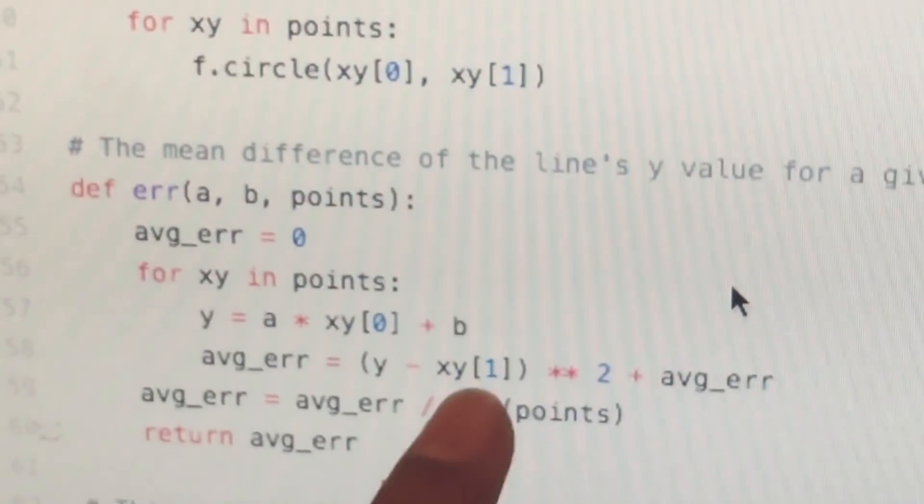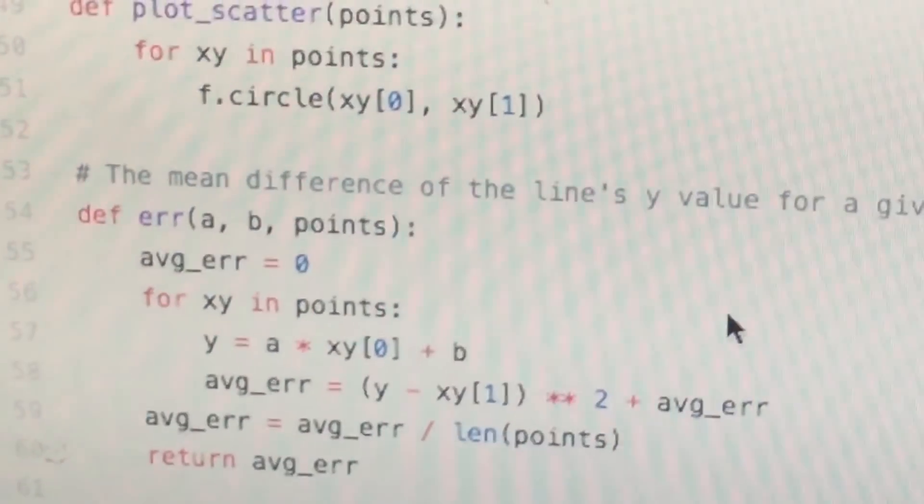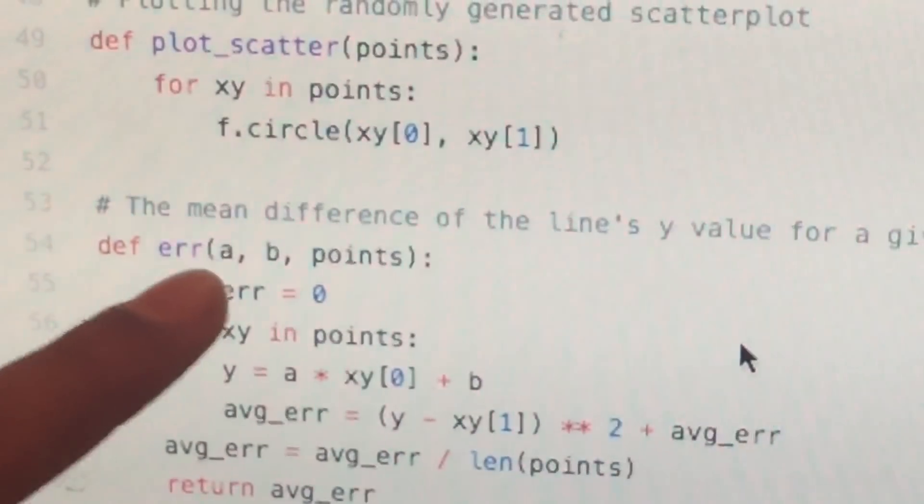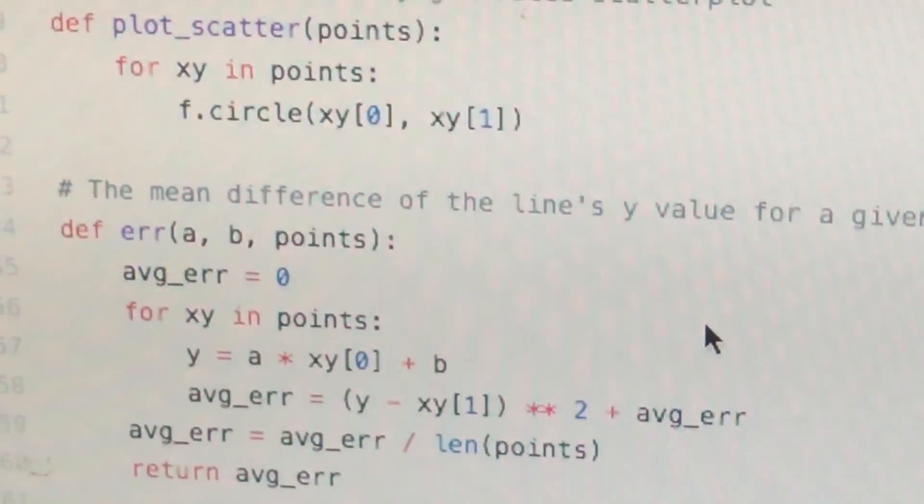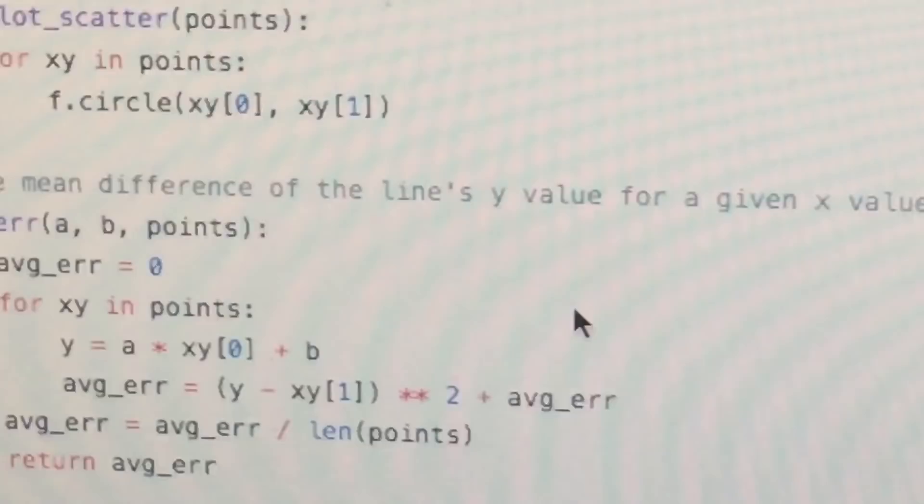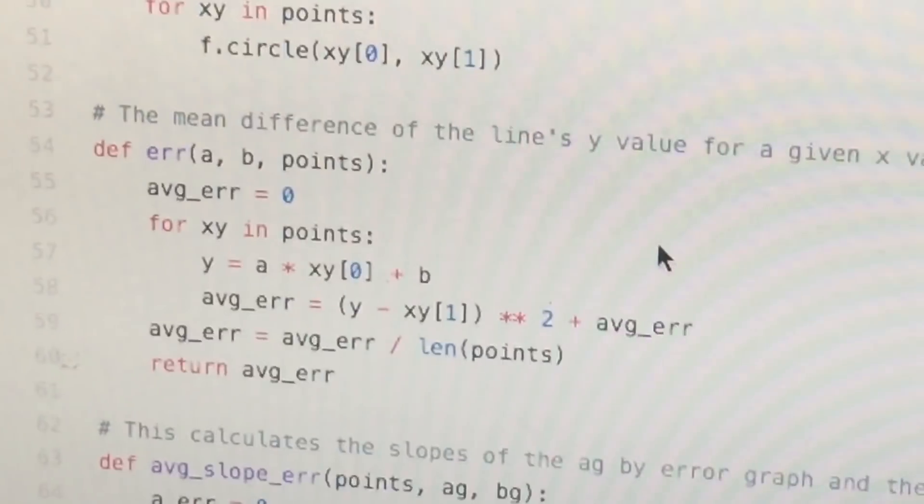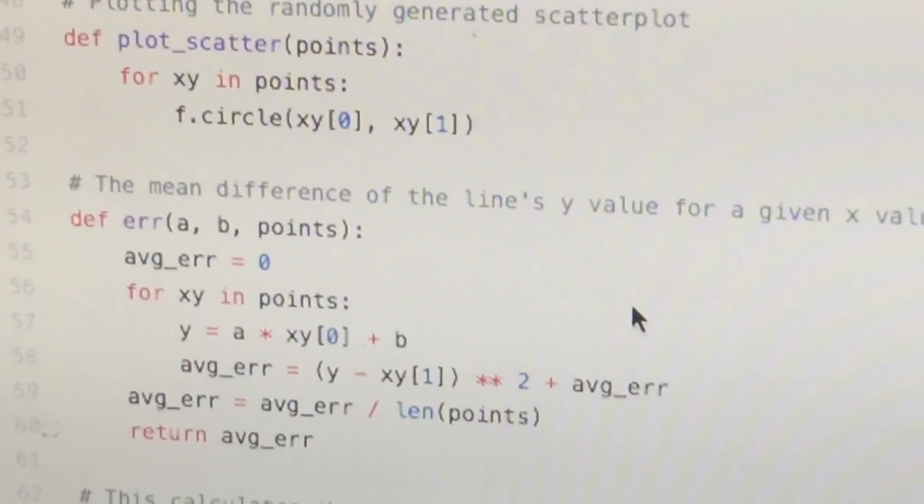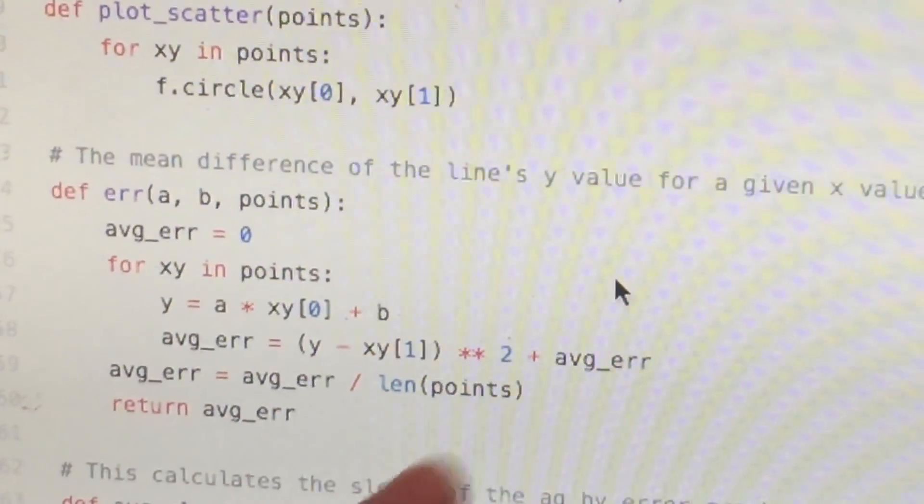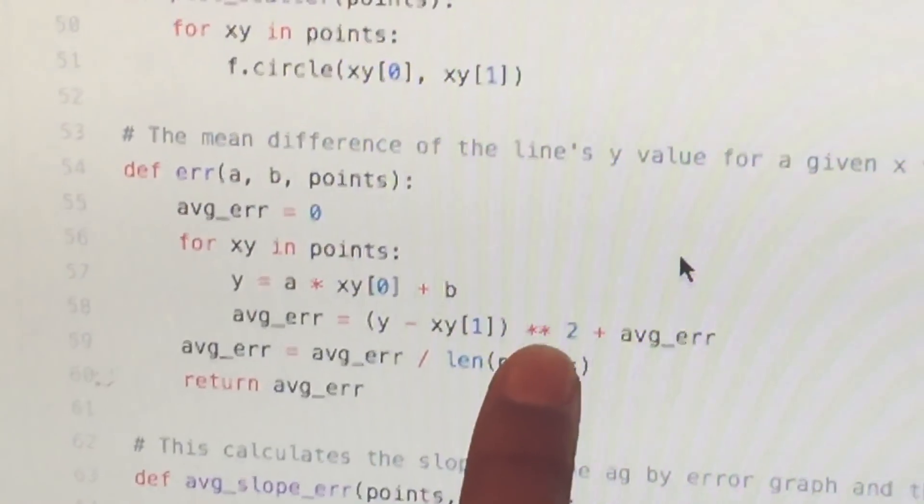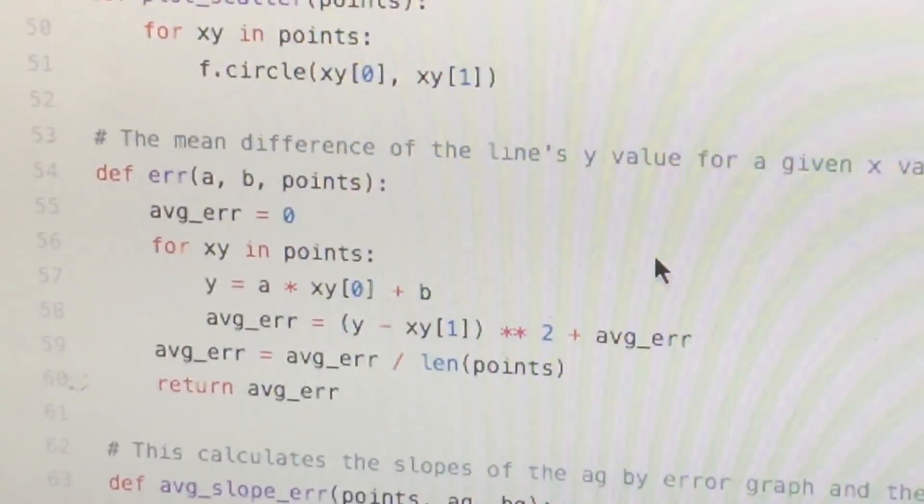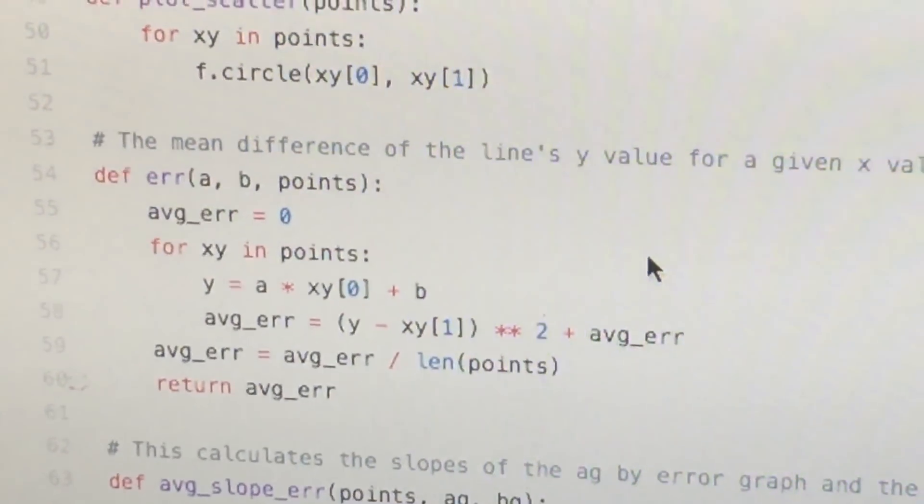Minus the Y minus the real Y, because here you're generating a whole new a and b to try on your points. And then that's times 2, plus the average error because you're going to divide it by the length of points later to get the average. So we're doing it to the power 2 because that gets it.